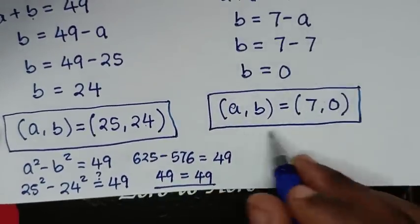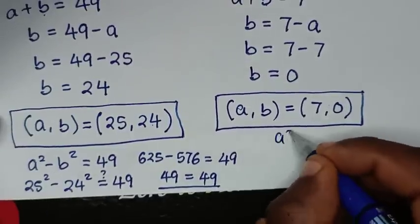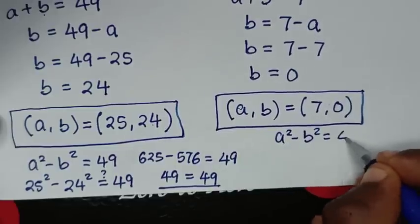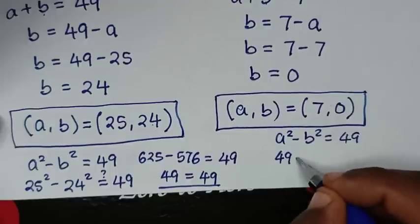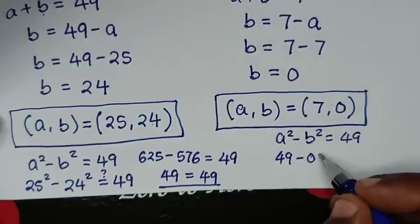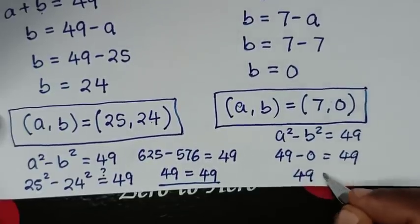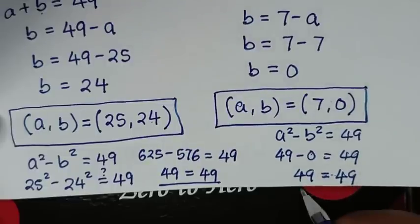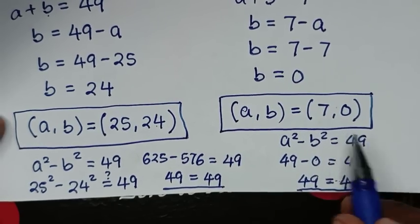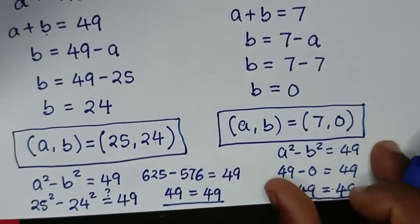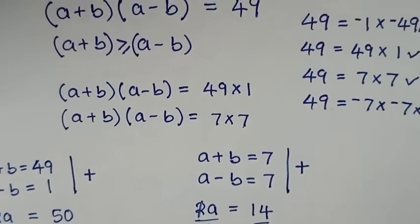For the second solution: 7 squared minus 0 squared = 49 − 0 = 49. Left side equals right side, confirming the second solution is also correct. Thank you for watching — don't forget to subscribe to the channel and see you in the next video.